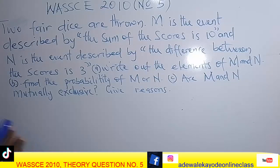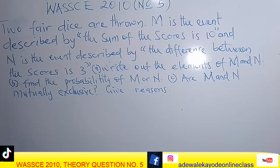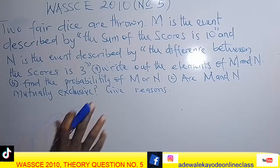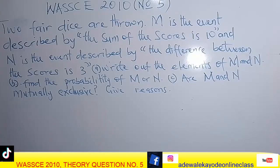We are asked: (a) write out the elements of M and N, (b) find the probability of M or N, and (c) are M and N mutually exclusive? If mutually exclusive, give a reason; if otherwise, also give a reason.